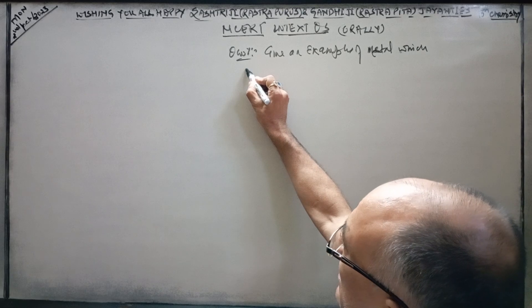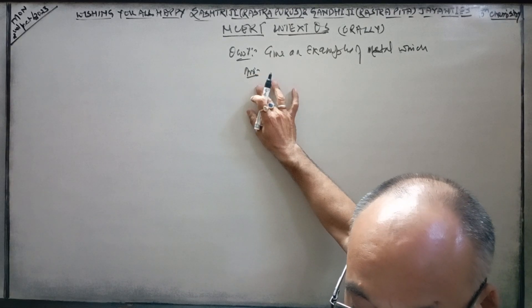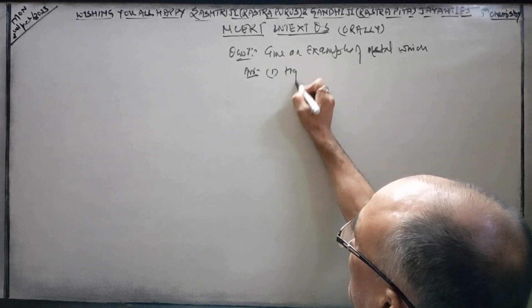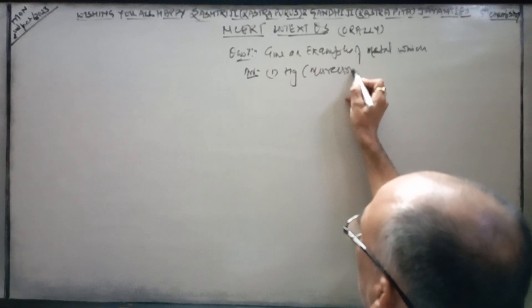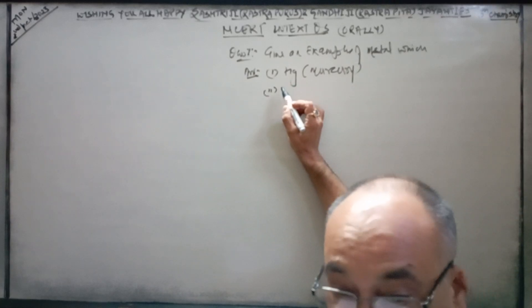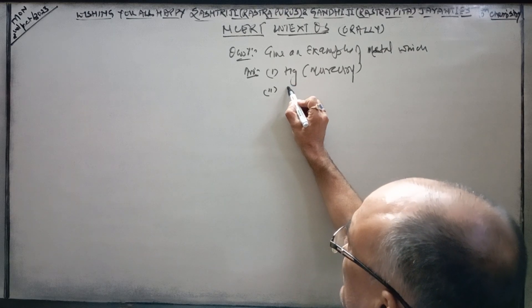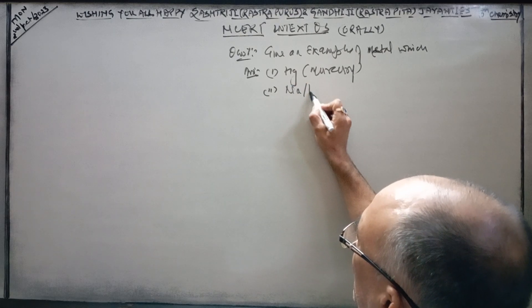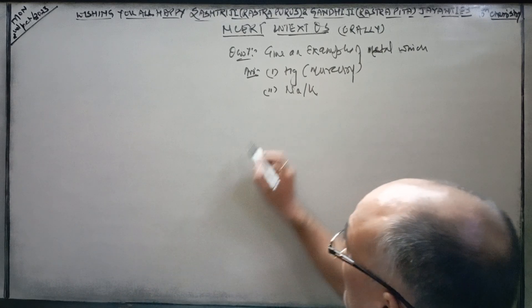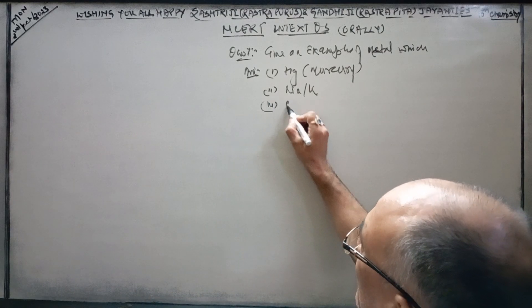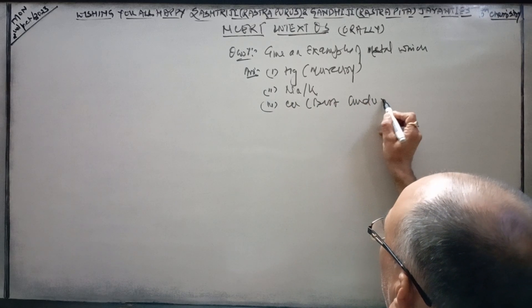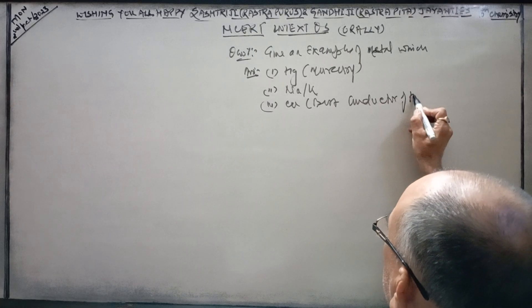First answer: liquid at room temperature - that will be mercury. Second, can be easily cut with a knife - you can easily cut sodium or potassium with a knife. Third, the best conductor of heat - copper. Beautiful.